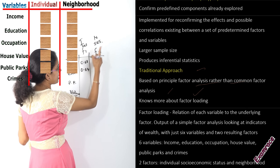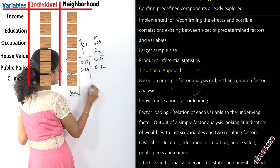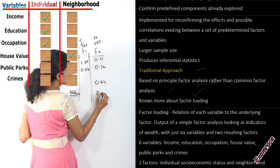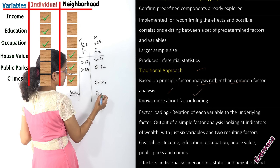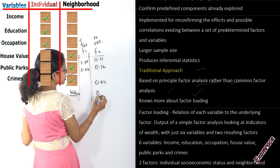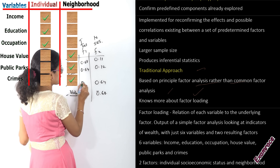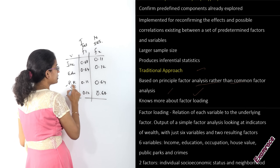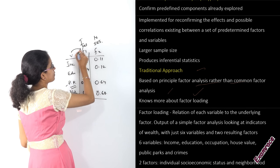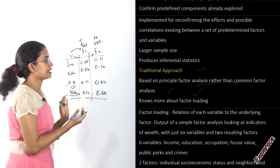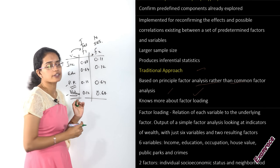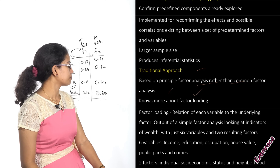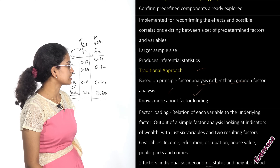For factor one, which is the individual socio-economic status, the values on income and education would be much higher in contrast to the factor two values. On the other hand, for public parks and violence or crime rate, I would have a higher factor loading for factor two — the neighborhood socio-economic status — in contrast to factor one. That's how we understand the loading of a factor: the relationship between the variable and the factor.